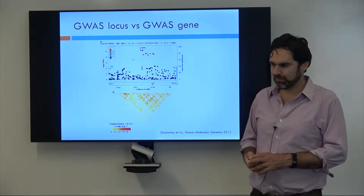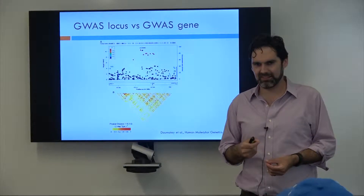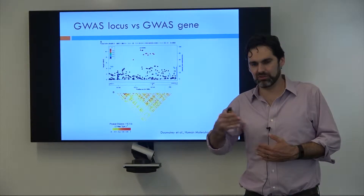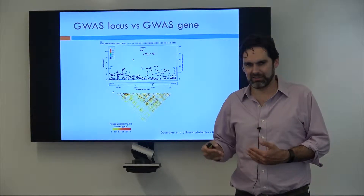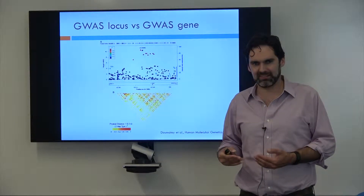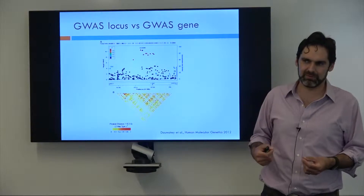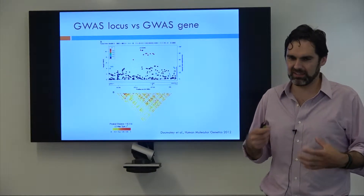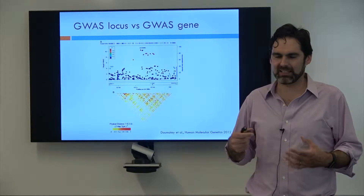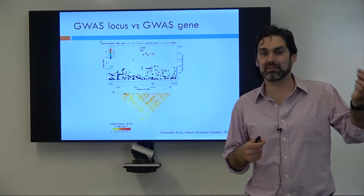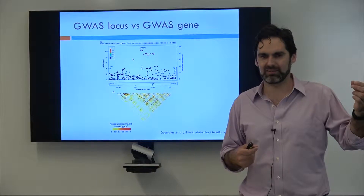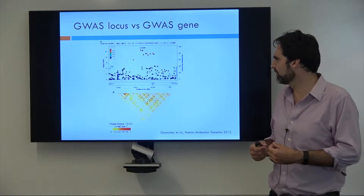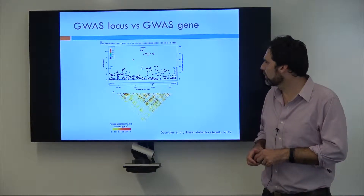However, it's very possible that the top hit — naively, you might think that the top hit is the variant that's driving the trait. It turns out that's not necessarily the case. A lot of times you can actually have multiple variants that all have an effect, and due to the LD structure being complicated, you can get a variant that has no effect actually appearing to be really strongly associated when in reality it's just a couple of other variants interacting with it.